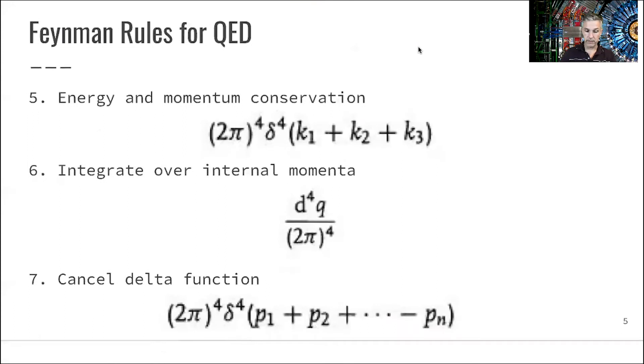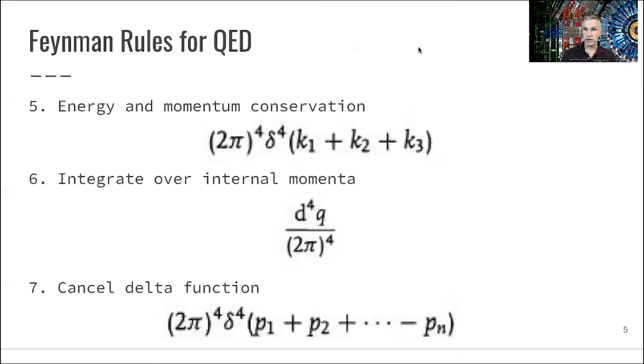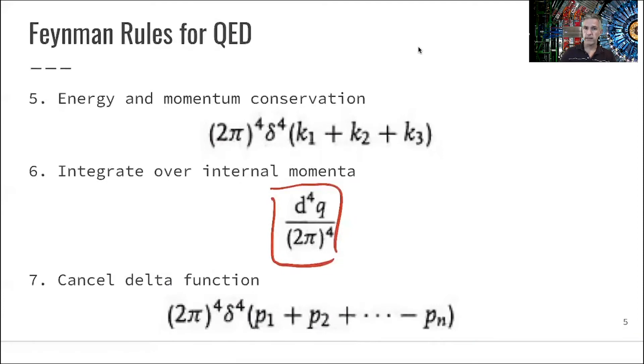The next step is very much the same. We have to make sure there's energy and momentum conservation, and we enforce this by introducing delta functions. We have to integrate over each and every internal momentum, and each internal line gets one of those integration factors. After we integrate, we're left with the delta function, and we have to cancel that delta function.